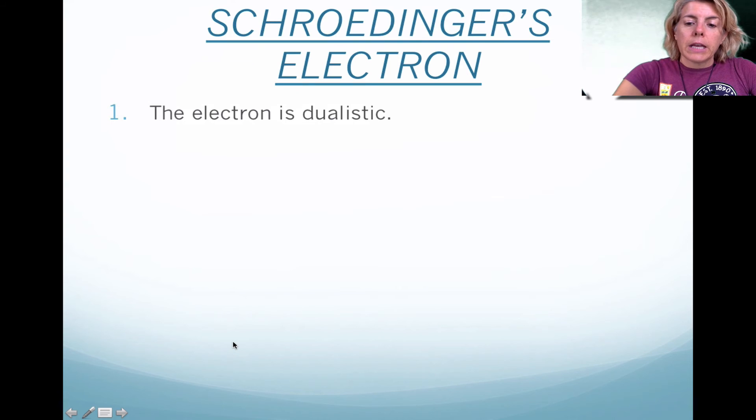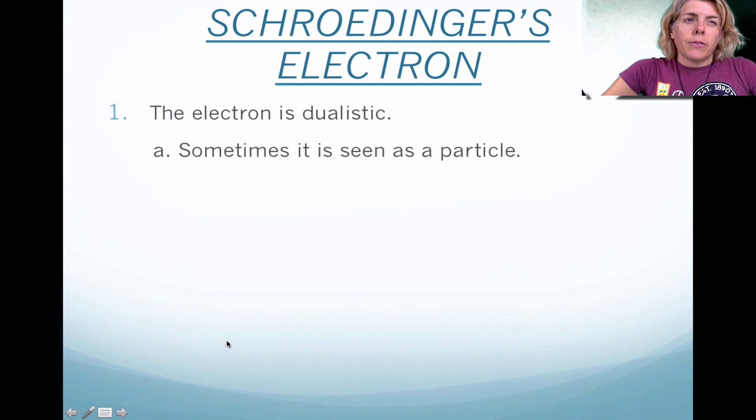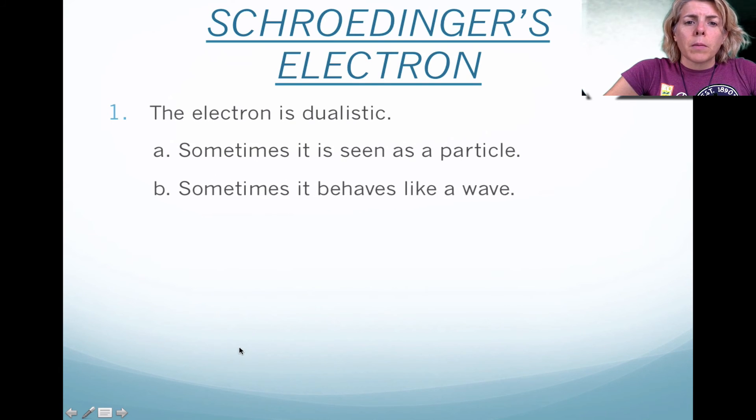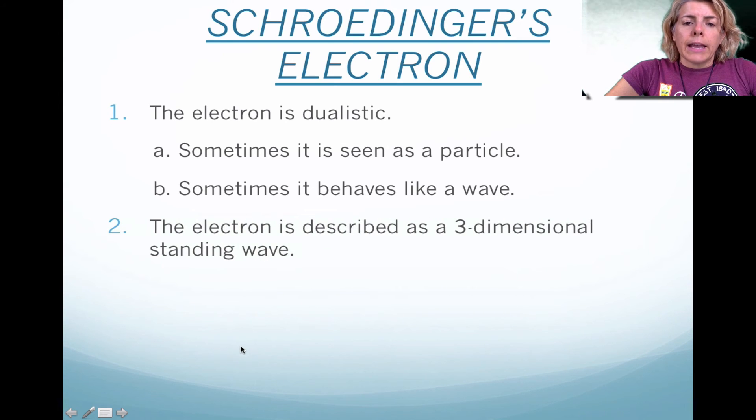So with the electron, he discovered that it was dualistic. He sought to show that it's sometimes viewed as a particle. But however, you may see some instances where the electron behaves as a wave. So it's sort of similar to light where it has duality.